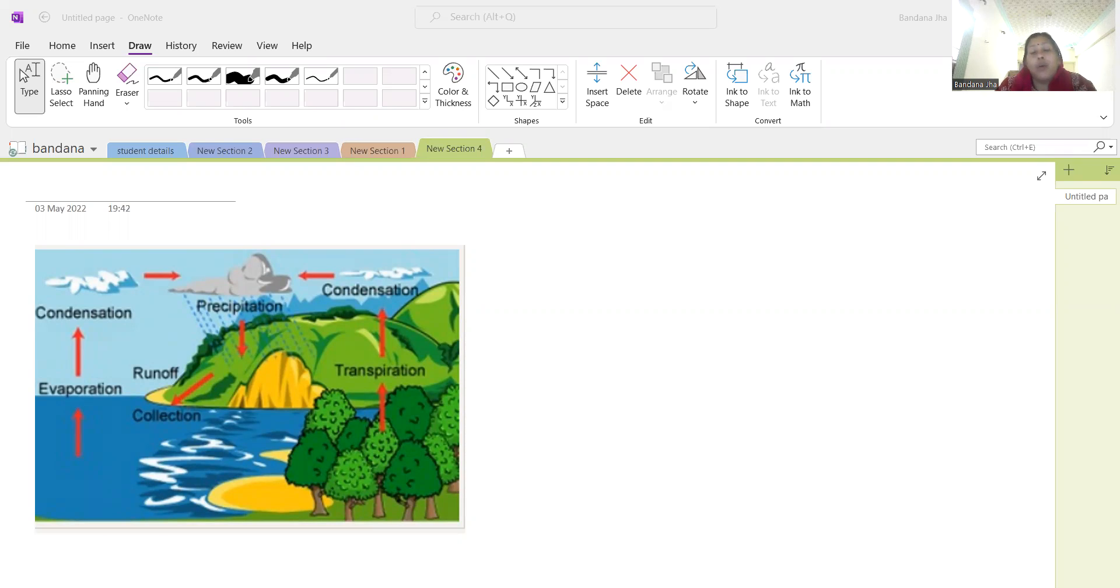Water cycle is an important biochemical cycle. Why we are saying it is a biochemical? Because here we are talking about the water molecules. First water molecules are evaporating, then condensing, then again rainfall happens. Water is H2O - hydrogen plus oxygen. Because of that reason we are telling it as a water cycle is a biochemical cycle.